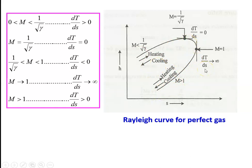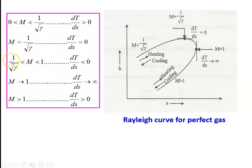The Rayleigh flow process occurs in the subsonic region where M < 1/√γ, and in the supersonic region where M > 1. The heat transfer process does not occur between M = 1/√γ and M = 1 in the subsonic region, because dT/dS < 0 there, meaning entropy would decrease, which is not physically possible. For a perfect gas with γ = 1.4, we can calculate the M value and define the process for a specific gas.